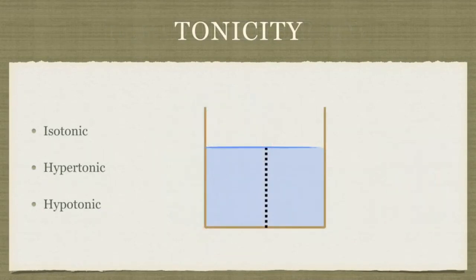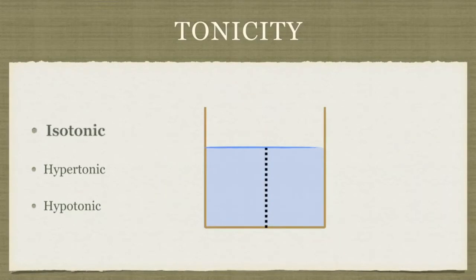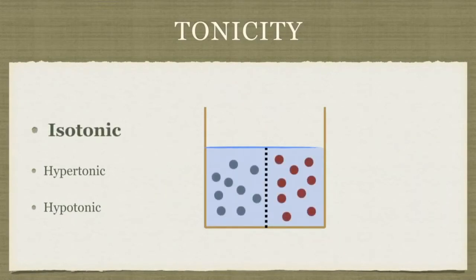When we look at fluids, we like to compare concentrations, or the amount of solute dissolved in the solution. If we have an equal amount, it is called an isotonic solution. So here the blue is the same number as the red, so comparing these two solutions, they are isotonic.